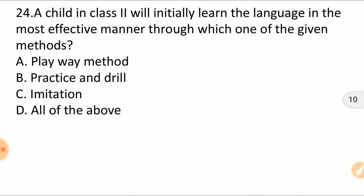A child in class 2 will initially learn the language in the most effective manner through which one of given methods: A) play way method, B) practice and drill, C) imitation, D) all of the above. The right answer is D, all of the above.